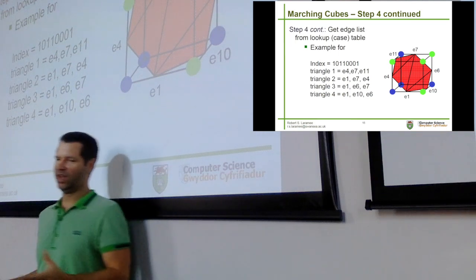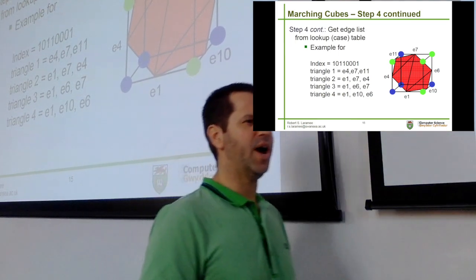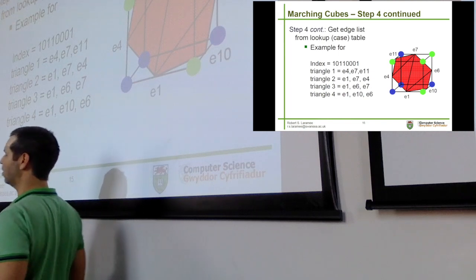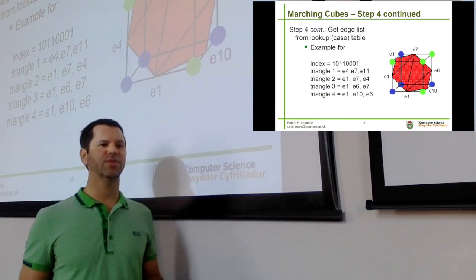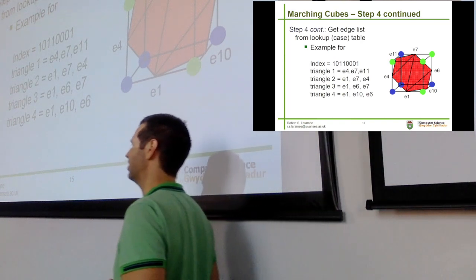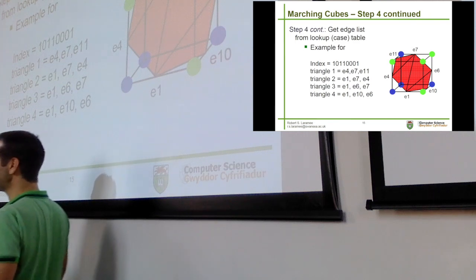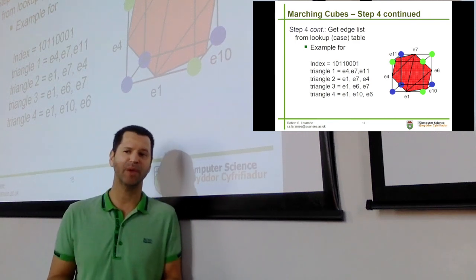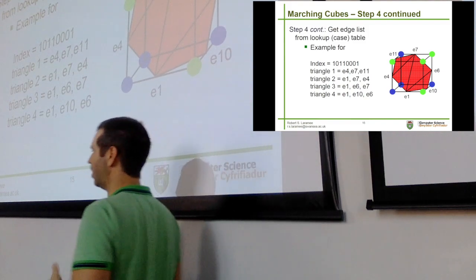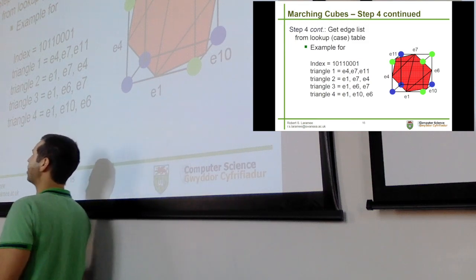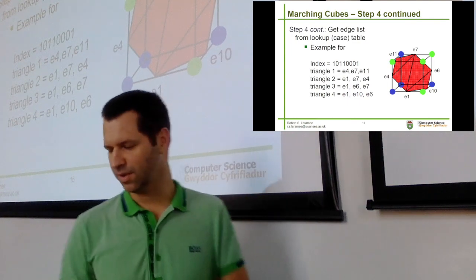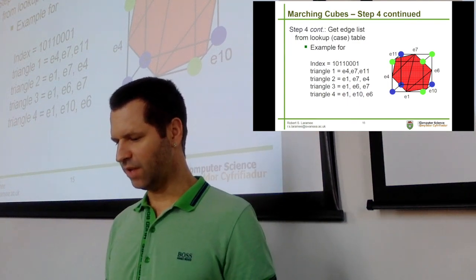If you understood that, you're really paying good attention. And if you didn't, it's okay — you can review it. By the way, I did not understand every single step of this algorithm the first time I heard it either. What I did to understand it was read the research paper — this is a summary of a research paper called the Marching Cubes algorithm. I read the research paper and then I understood it. So that's step four.